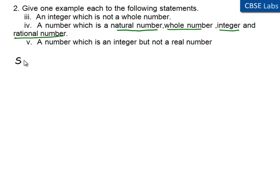Coming to the solution, we need to find one example of a number that is simultaneously a natural number, whole number, integer, and rational number.